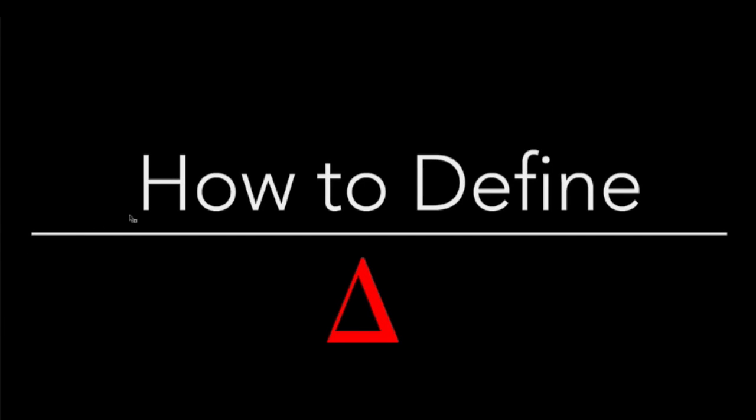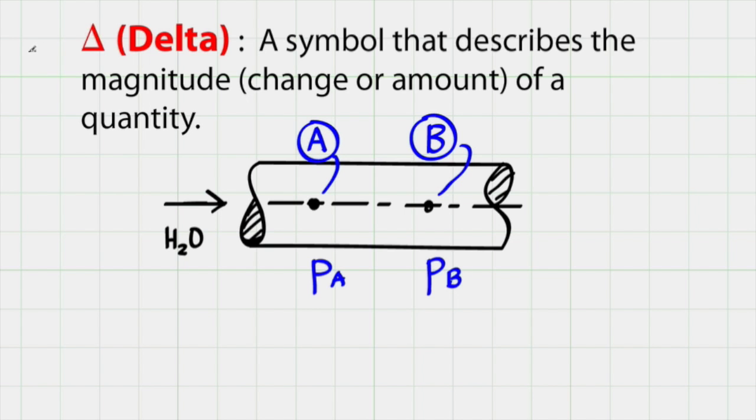Welcome. In this lesson, I'm going to talk about how to define the symbol delta. In the Greek alphabet, delta is the fourth character and it has an uppercase and a lowercase version. This is the uppercase version.